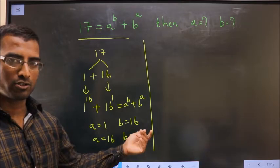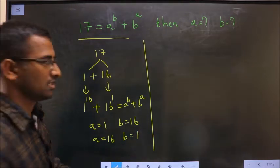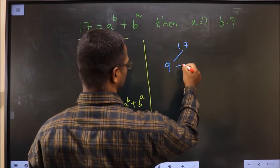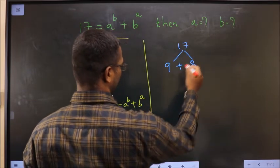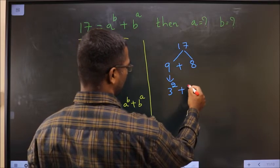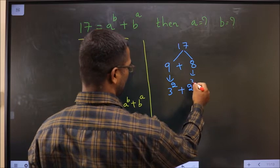A second option is also possible. 17 can also be written as 9 plus 8. 9 can be written as 3^2 and 8 can be written as 2^3.